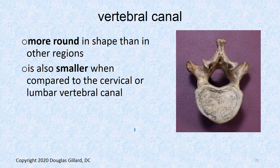The vertebral canal, as we said, is much rounder in shape. It is smaller compared to the cervical or thoracic cord as well. The neuroforamen are actually bigger, but the central canal or vertebral canal is smaller.